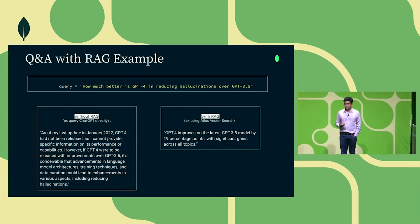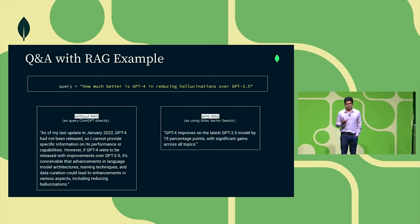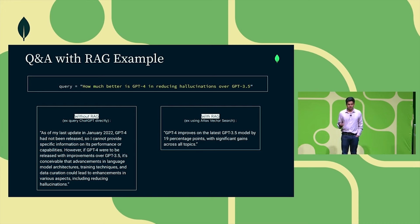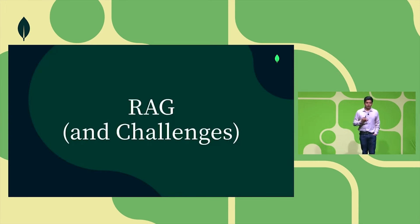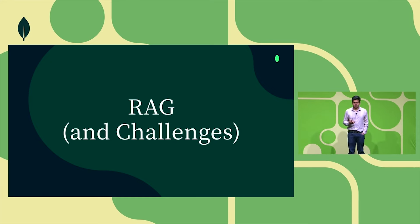Everyone has used tools like ChatGPT and Claude, where you can ask questions to large language models. With RAG, we power this Q&A where you can marry your private data sources with public information using the reasoning capabilities of this emerging class of AI models called large language models. RAG is one of the most critical patterns for putting together these powerful applications.